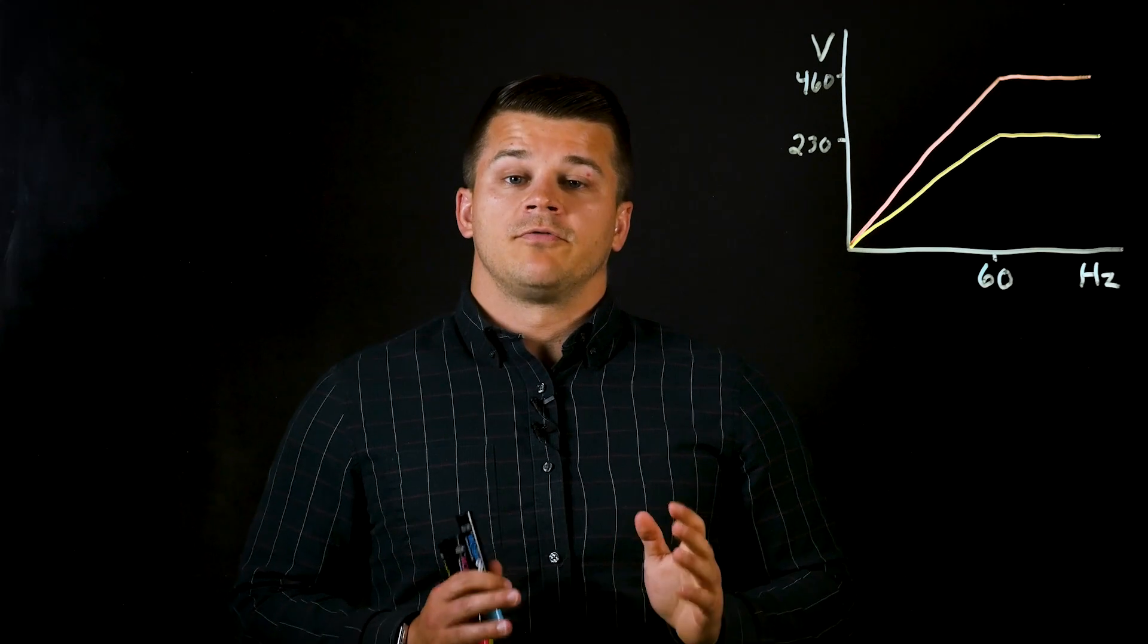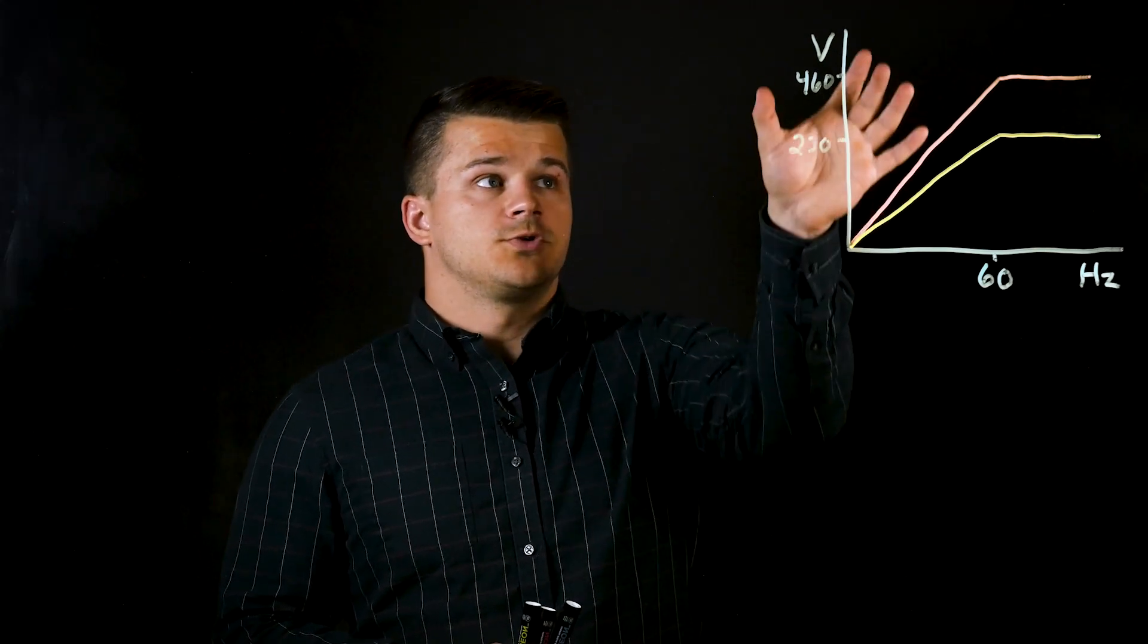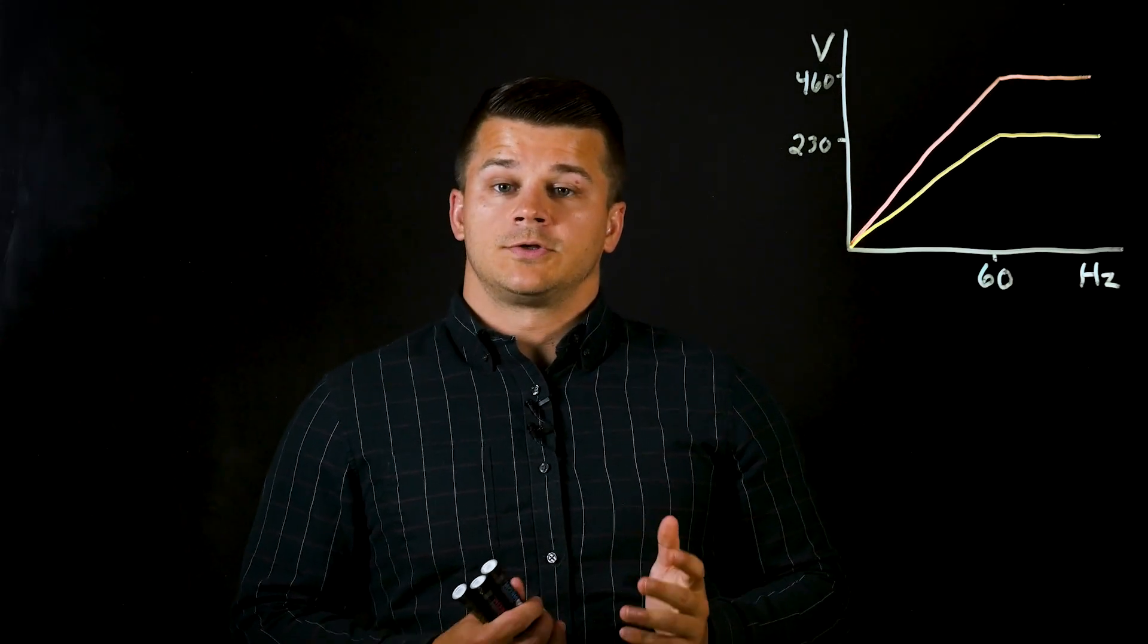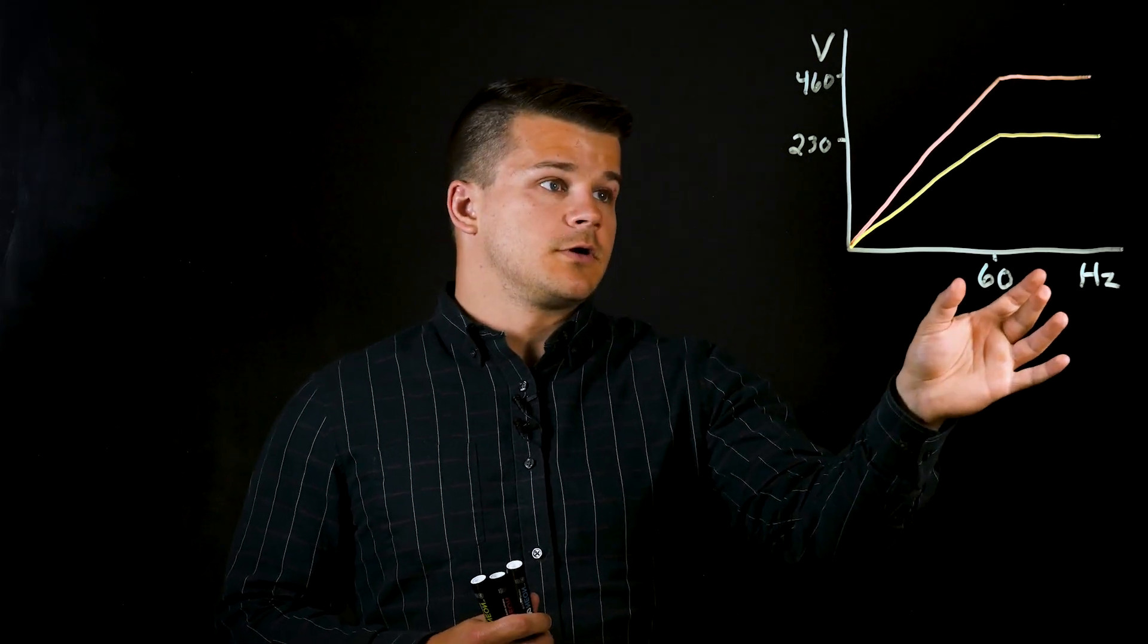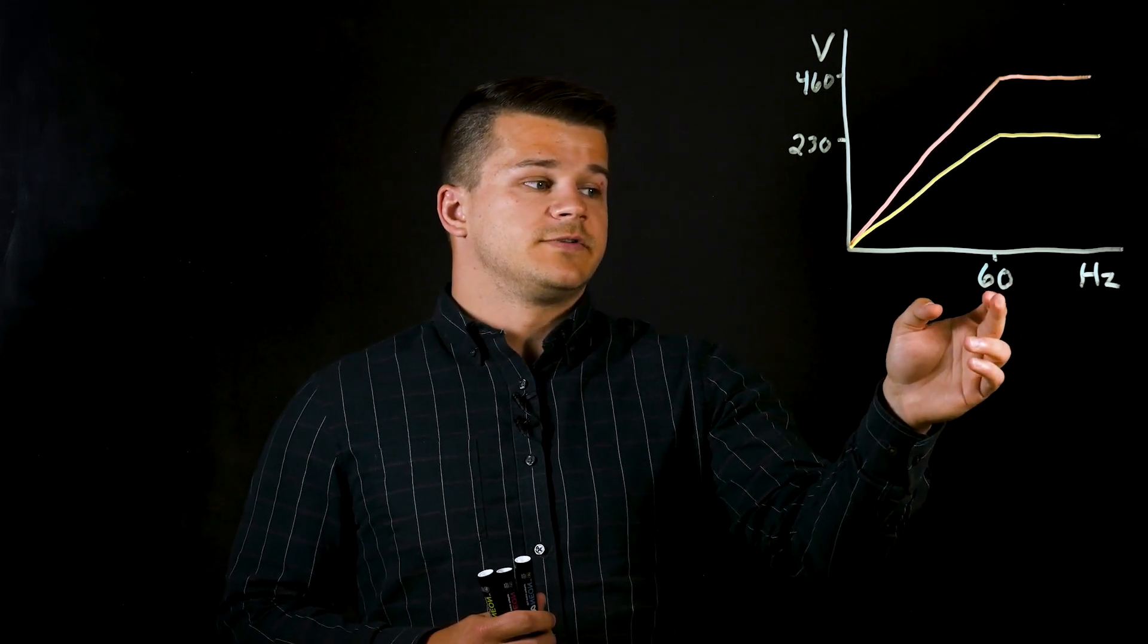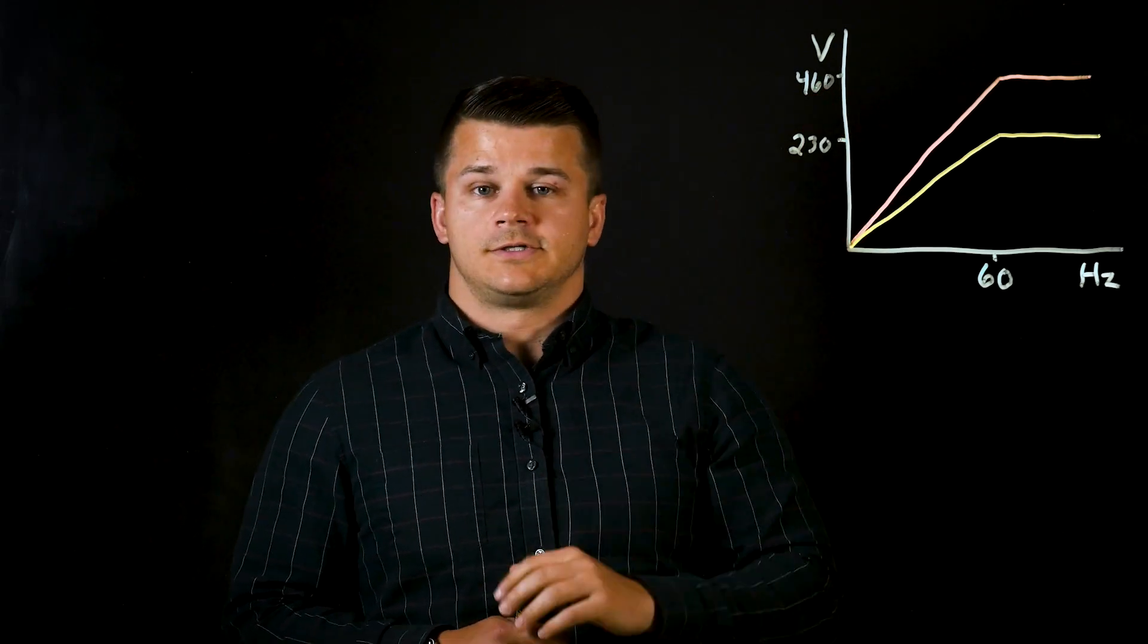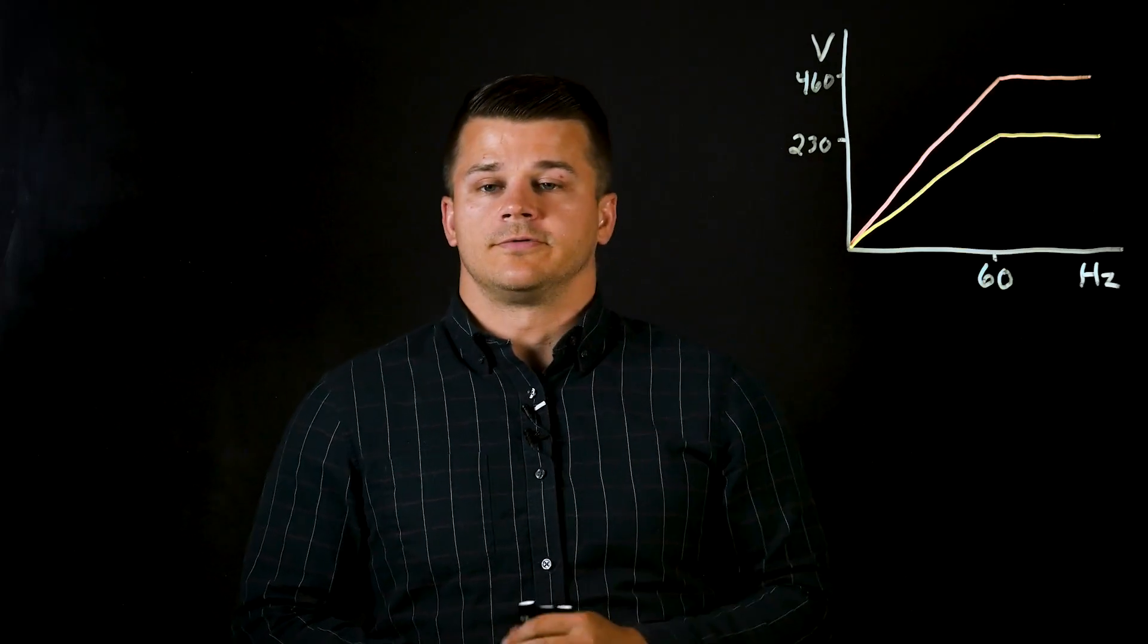So in a past video we talked about the volts per Hertz curve. The theory behind this is that by keeping the ratio between voltage and frequency constant, the motor will develop its rated torque until it reaches the rated point in the US, 60 Hertz. So in this case we have 60 over 230 volts or 60 over 460 volts. And we just need to keep this line straight until it reaches the rated frequency.